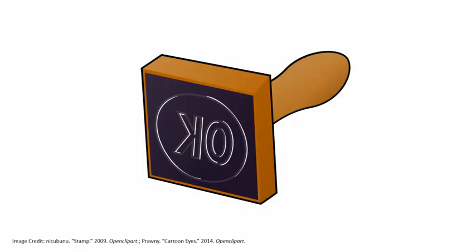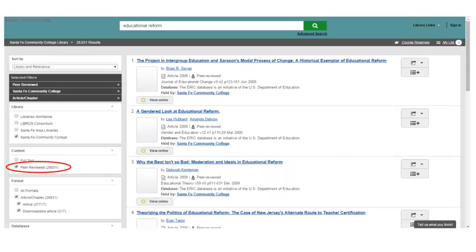and that is valuable to any researcher who needs authoritative and accurate information. When using a library database, there is typically a very simple way to make sure that you can find peer-reviewed articles. A simple checkmark in the limiters on the left-hand side of the screen will filter your search results and only bring up peer-reviewed results.